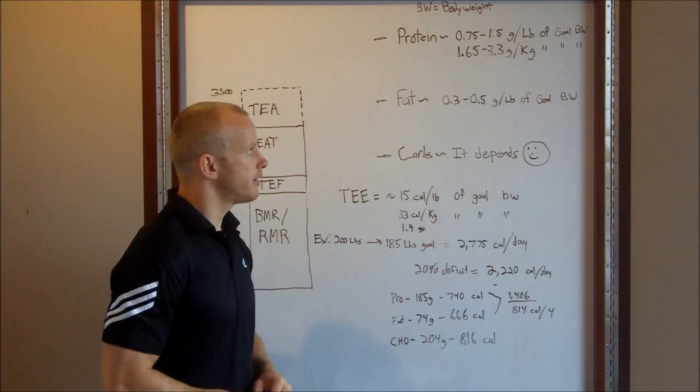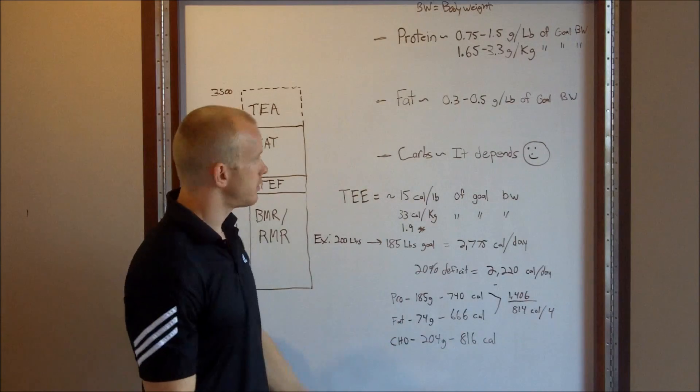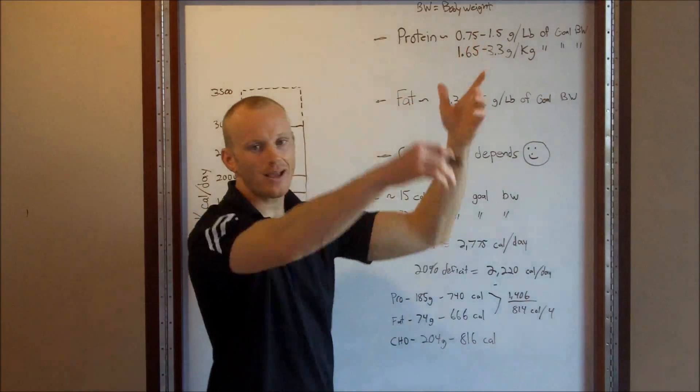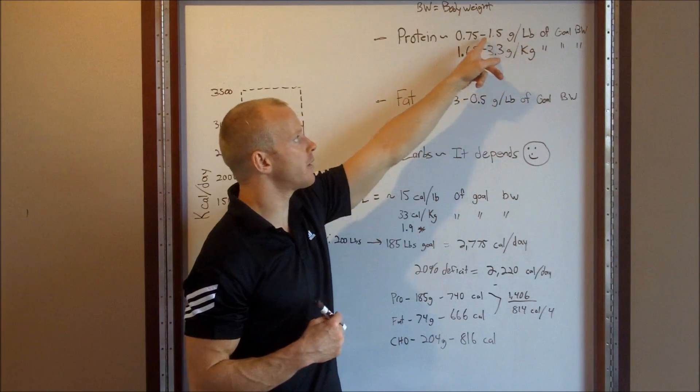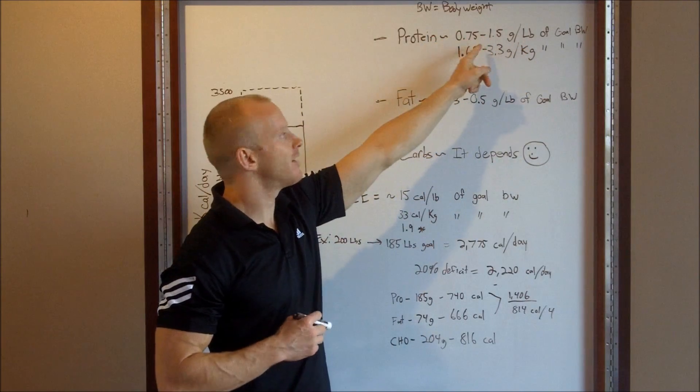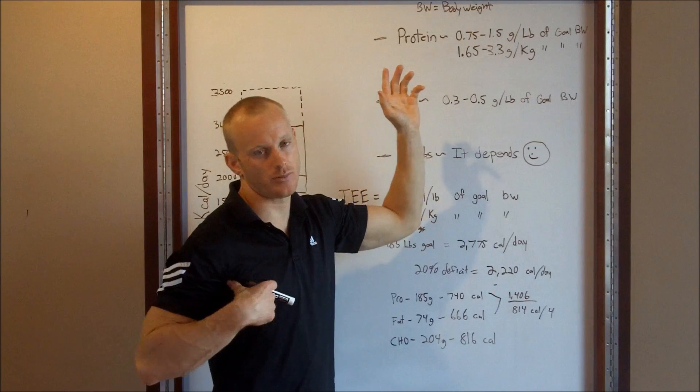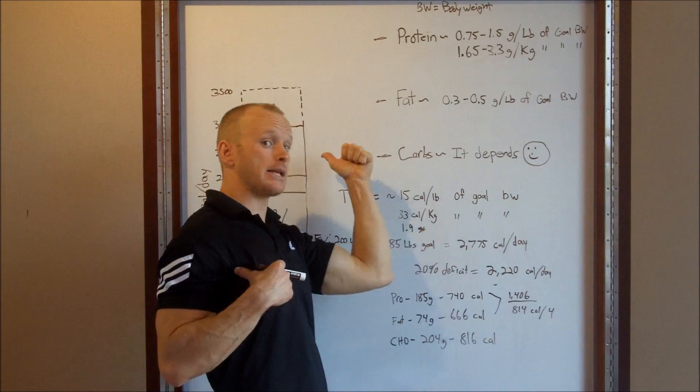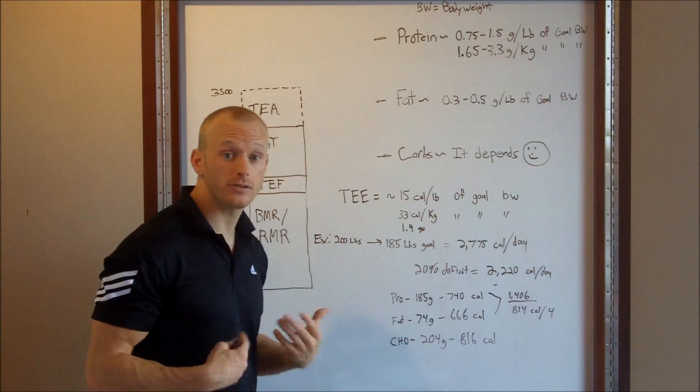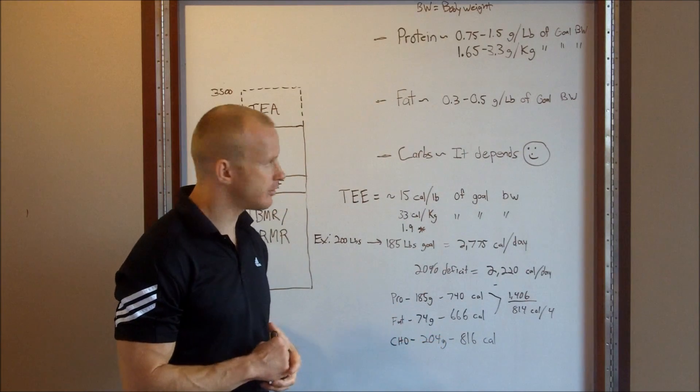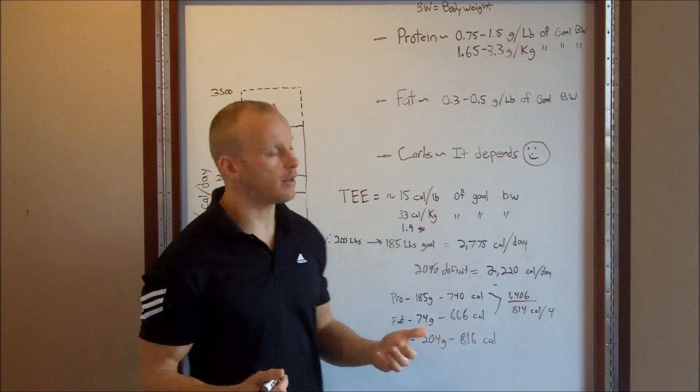Now, 20% deficit puts us at 2,220 calories. So now the question is, well, how much protein, how much fat, how much carbs? So, start with protein. If you need protein, it's essential. It's a range. It can anywhere from 0.75 to 1.5 grams per pound of goal body weight. Now, if you're on a caloric deficit, you're going to be at at least a gram of protein per pound of goal body weight. Because protein, A, has a high thermic effect, B, it's more satiating, it's more filling.